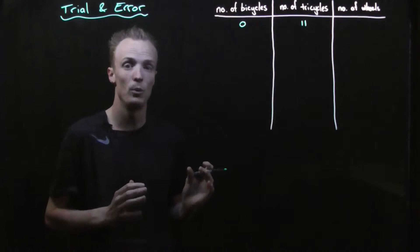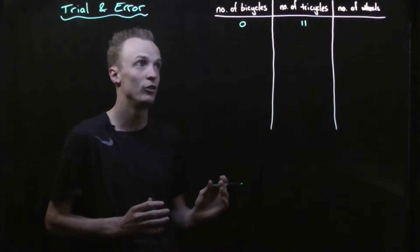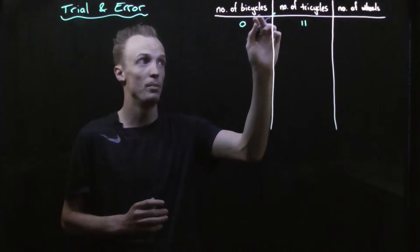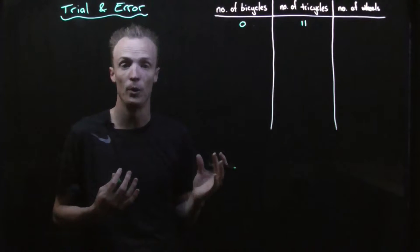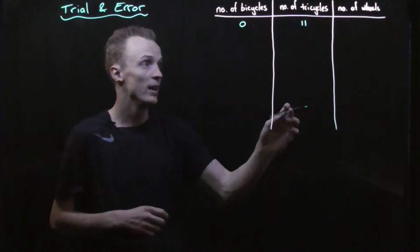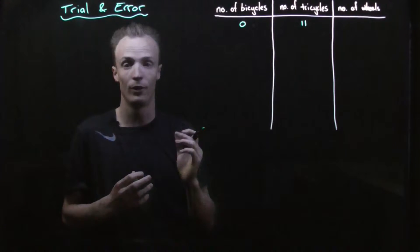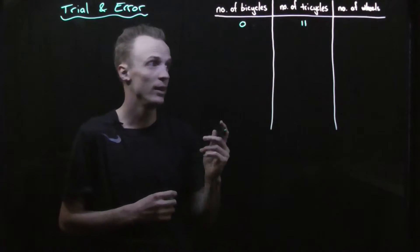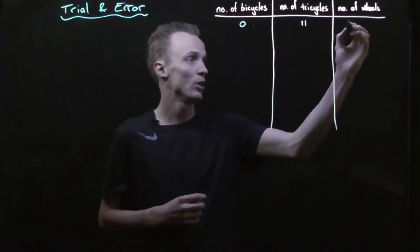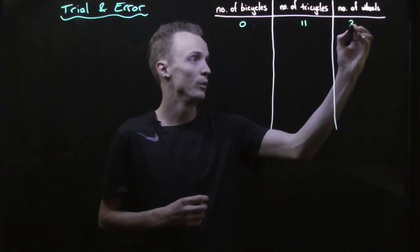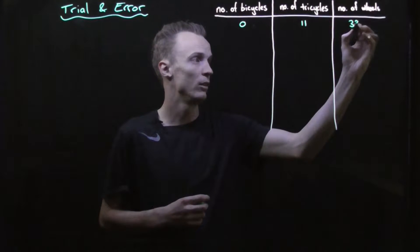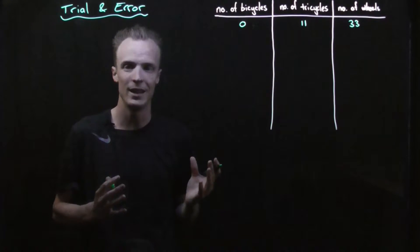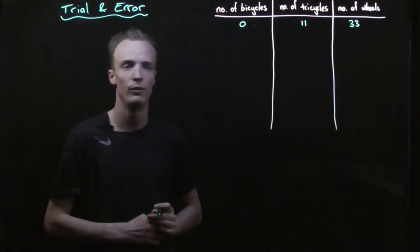To determine the total number of wheels for this combination, we know there are no bicycles so no wheels from those. Each tricycle has three wheels so we multiply 11 by 3, giving a total of 33 wheels — which isn't what we're looking for.